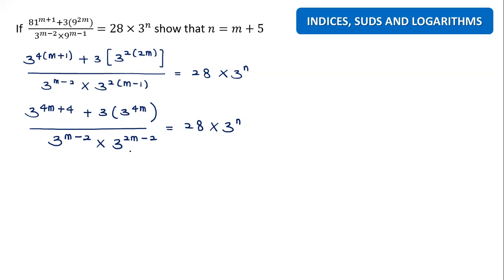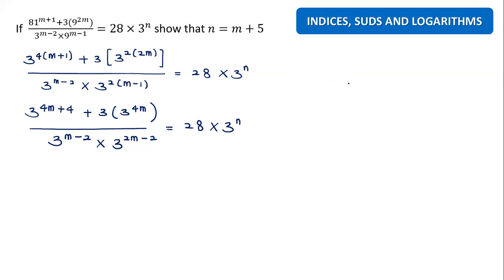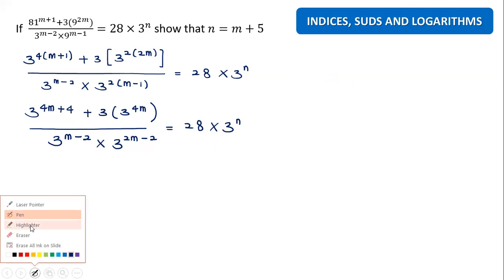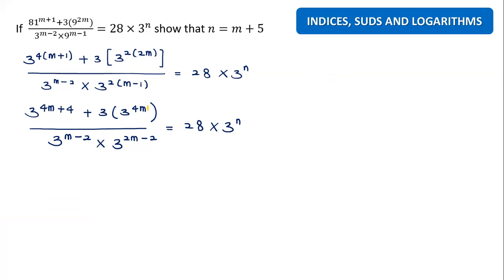On top I want to factorize. To factorize, you must have the same terms on both sides. For example, xy plus xz — you factorize the x because both sides have x. Here I can see that this term and this term are the same. The problem is the extra +4 in the exponent, so I need to remove that.